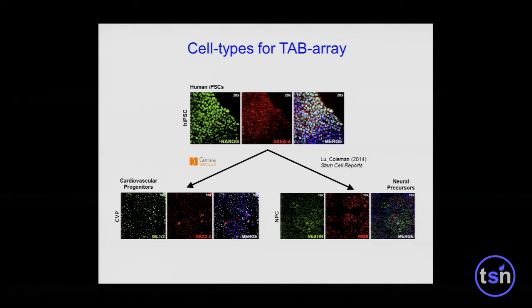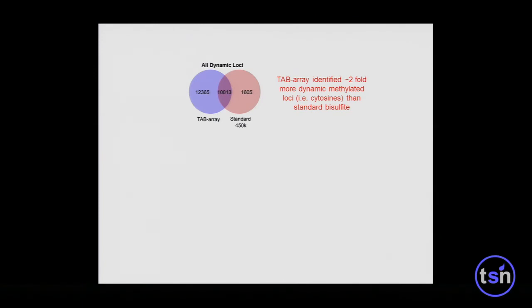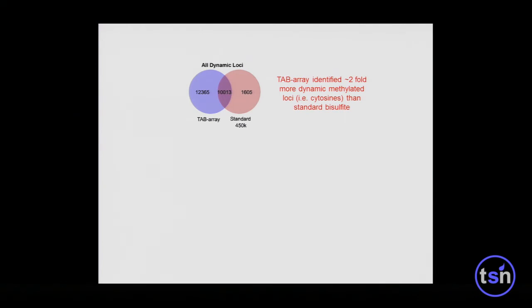We were able to identify a number of dynamically regulated loci — in this case, cytosines — that were common to both the standard bisulfite method and TAB array. Similarly, we identified greater than two-fold more dynamically methylated loci via TAB array than by standard bisulfite.